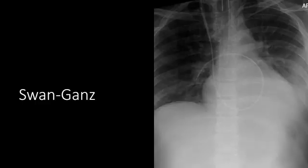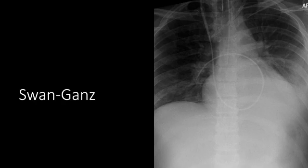This image depicts a Swan-Ganz catheter, which are rarely used nowadays. Technically, these are central venous catheters that head through the right atrium, right ventricle, out through the pulmonary outflow, and should be parked somewhere in the main pulmonary arteries. You do not want the catheter tip to be beyond the border of the hilum. These were historically used to measure right heart hemodynamic indices, pulmonary arterial, and capillary wedge pressures.